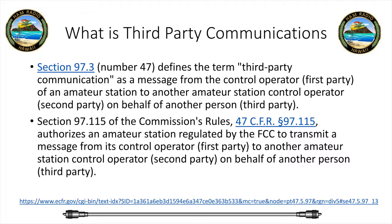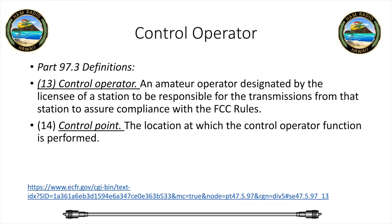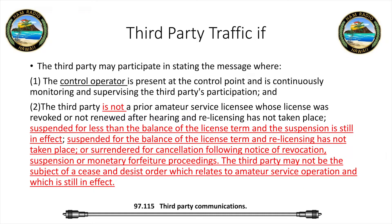You are making the call to your wife, so you're the first party and your wife is the second party — you're both licensed control operators. A control operator is an amateur operator designated by their license to be responsible for transmissions from that station to ensure compliance with the rules. You've got to be at the control point — the location where the control operator function is performed. A third party may participate by stating the message, morse coding it, typing it on RTTY, or using a digital mode, but you're the control operator. A third party can never be a control operator.